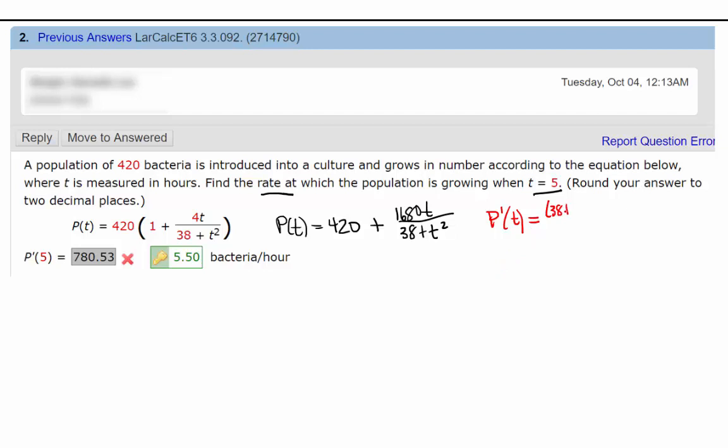Top is, derivative of the top is 1,680 minus the top, 1,680t times derivative of the bottom, which is 2t. So that would be all over 38 plus t squared squared.